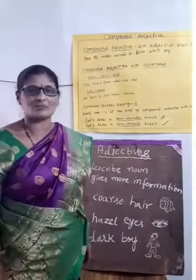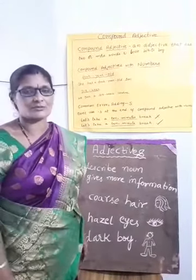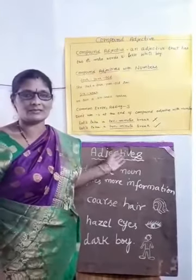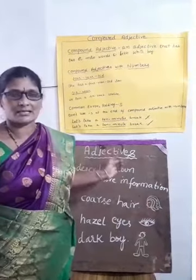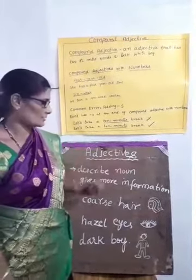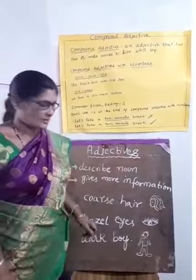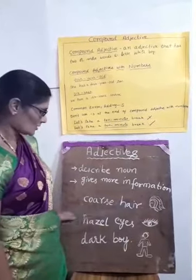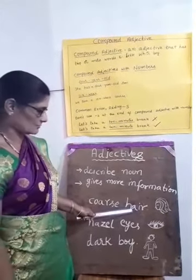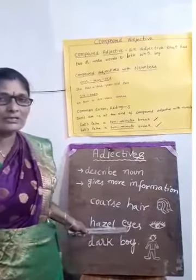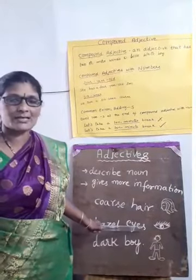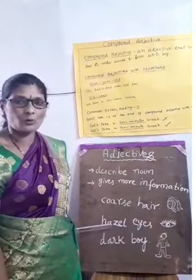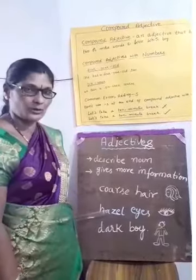Hello students, today's topic is compound adjectives. First, we learn what adjectives are — adjectives describe somebody or something, giving extra information. For example, 'coarse hair': how is the hair? Coarse, very rough. It gives information about the hair. How are the eyes? Hazel eyes — hazel means reddish brown in color.